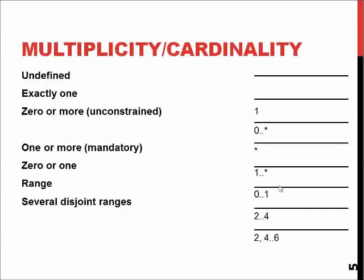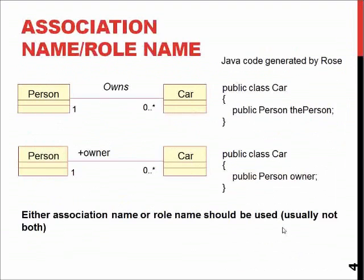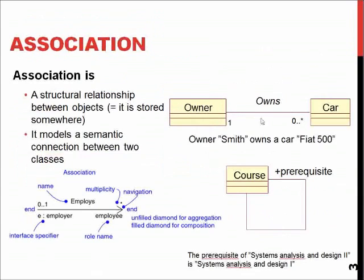Star alone means one or more, and a range as given here may mean zero or one, two to four, or four to six — basically a straightforward concept. Remember, you mention the amount at the other end of the relationship: each car has only one owner, and each owner may have any number of cars.